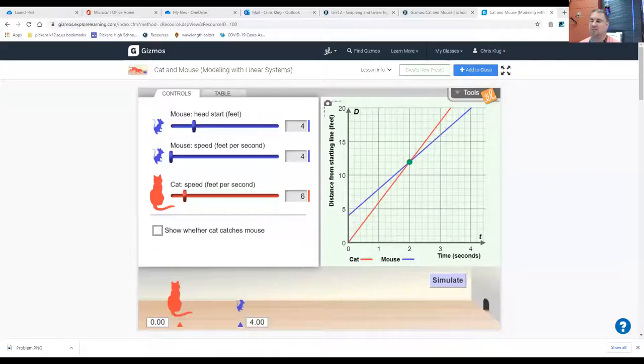And now I want you to think back to the cat and mouse gizmo. And I want you to think about what you see on this cat and mouse gizmo and how that relates to slope and specifically how that relates to change in distance over change in time.